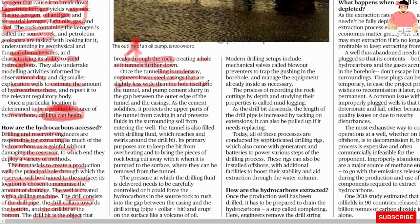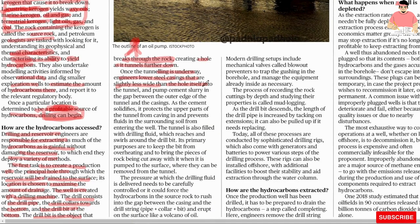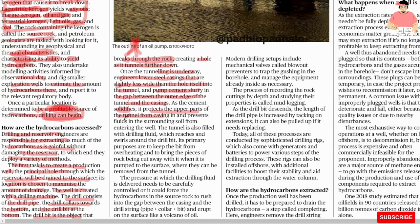Engineers pump cement slurry into the gap between the outer edge of the tunnel and the casing. As the cement solidifies, it protects the upper part of the tunnel from caving in and prevents fluids in the surrounding soil from entering the well. The tunnel is also filled with drilling fluids.